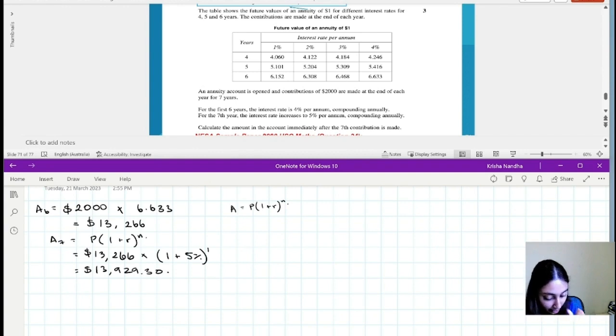Now that's how much interest has been paid on the seventh year. However, I haven't included the final contribution that they make at the end of the year. So I'm going to add another $2,000. So my final answer is $15,929.30. That's how much this person makes after seven years.